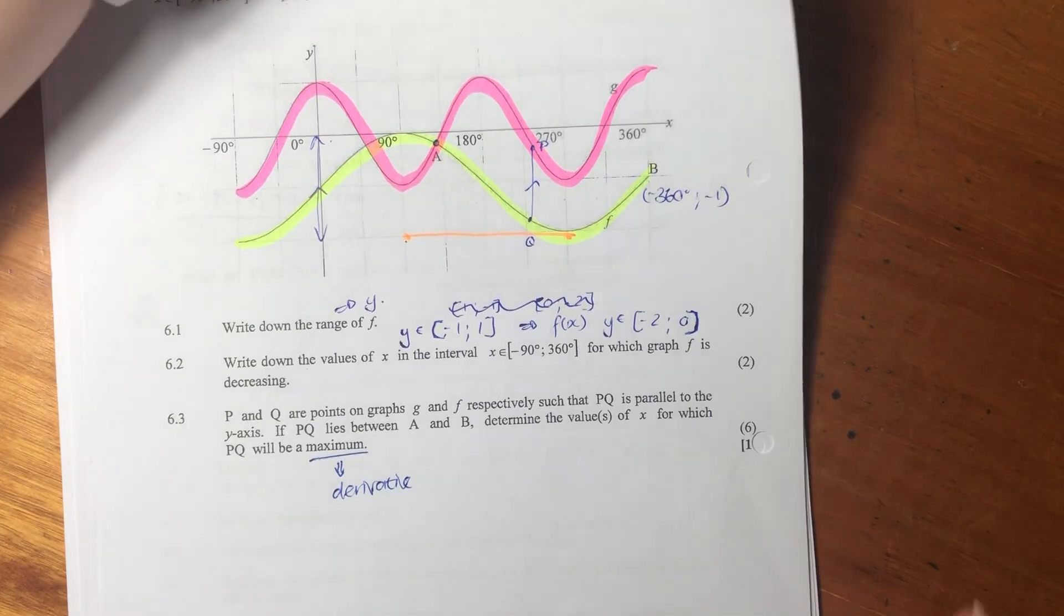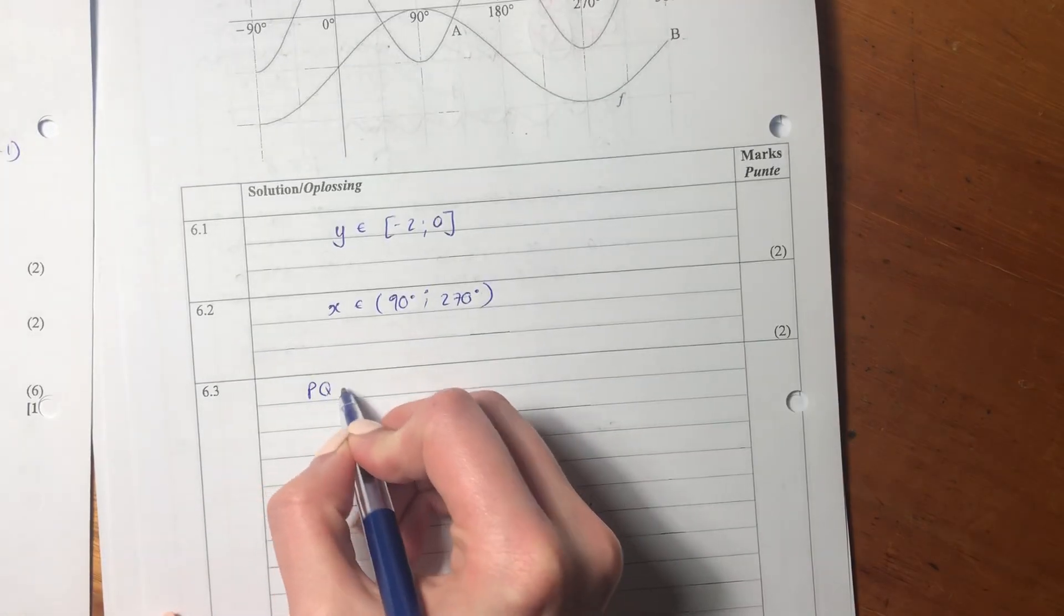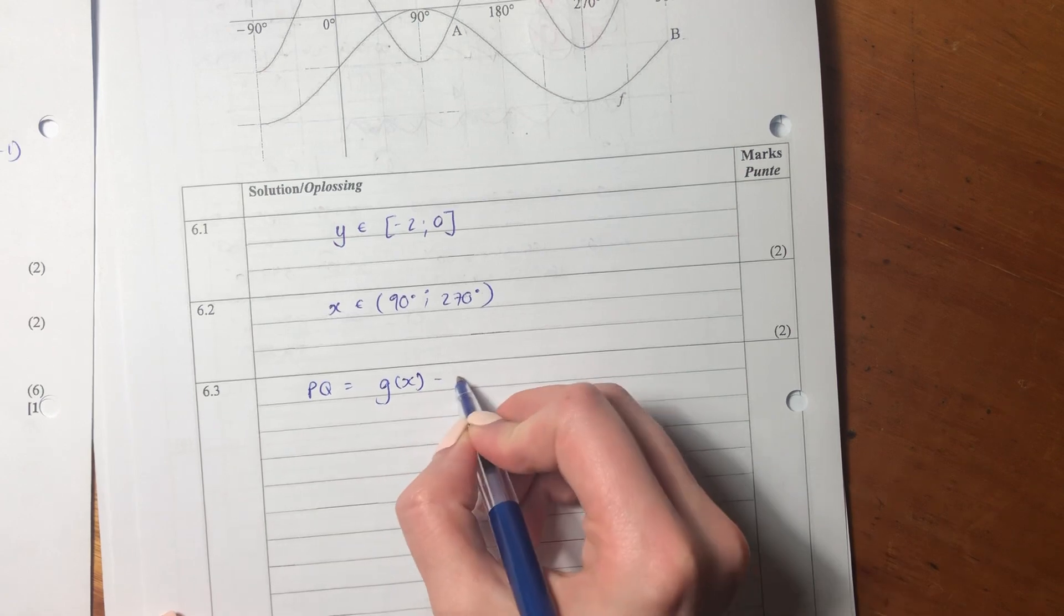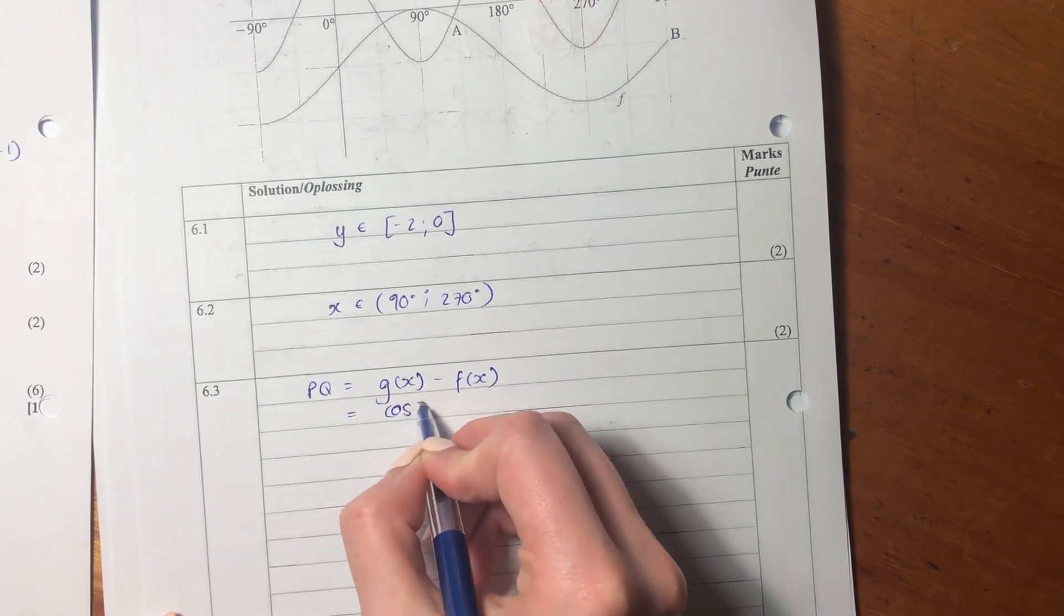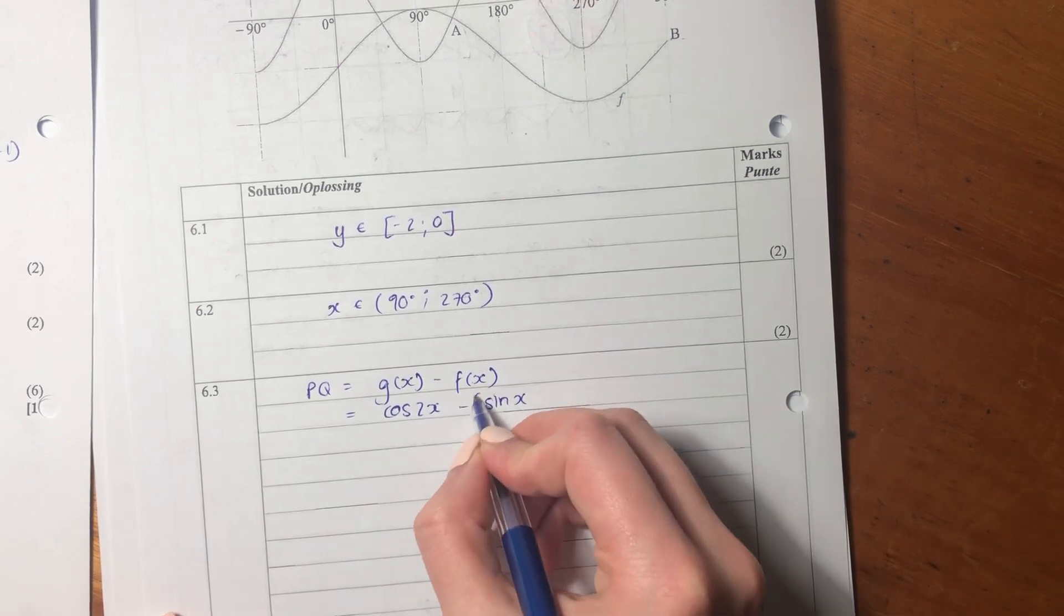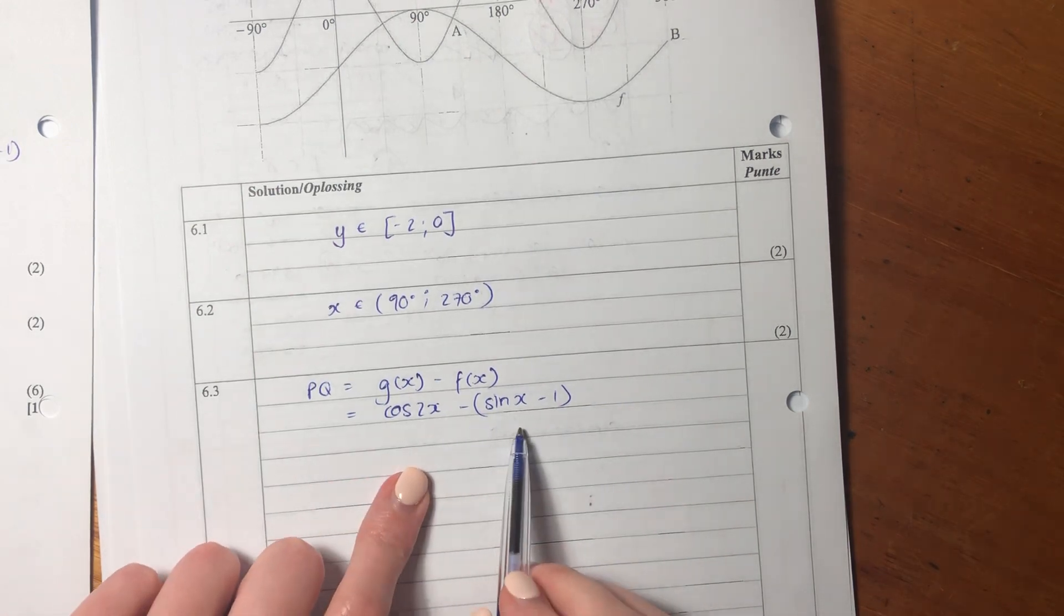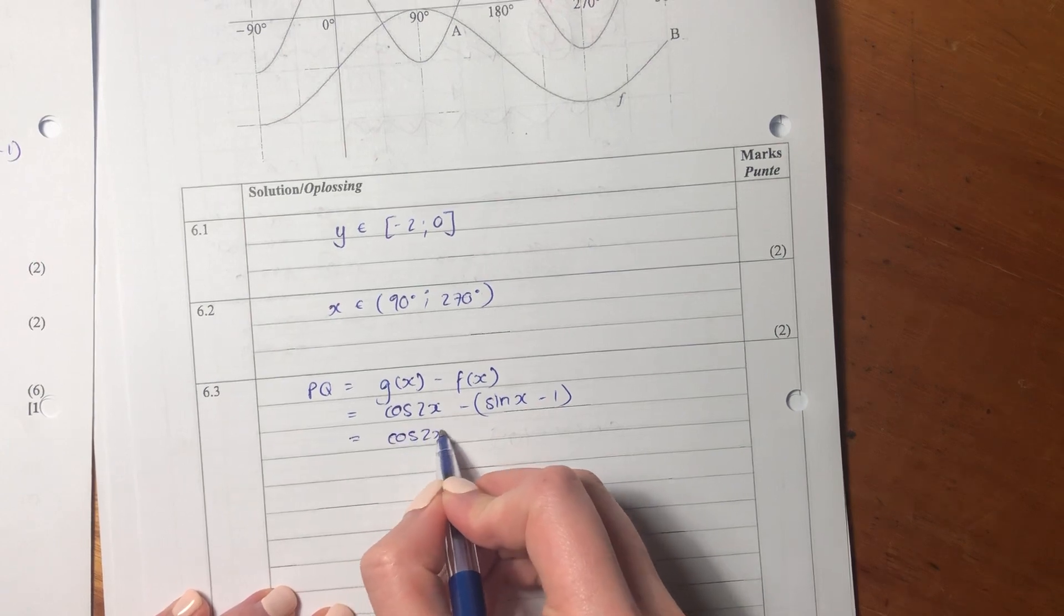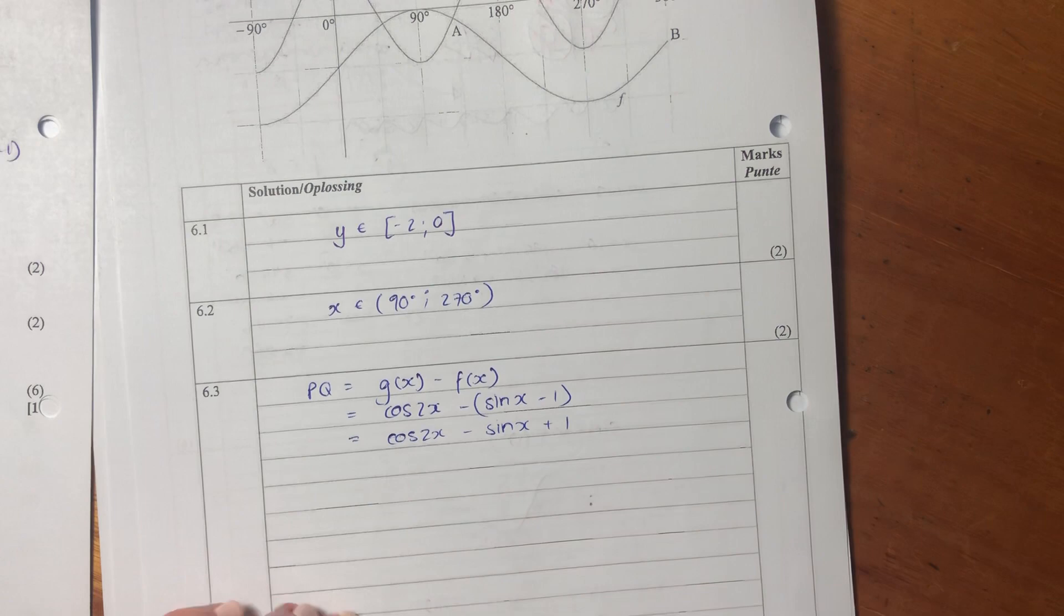So first of all, we're just going to minus f from g. So we're going to say, well, pq is just going to be g(x) minus f(x). So we have cos 2x minus sin x minus 1. Now, it's important to get your signs right, because I almost got my signs wrong there, as you just saw. But just work slowly and make sure that you know what's going on.